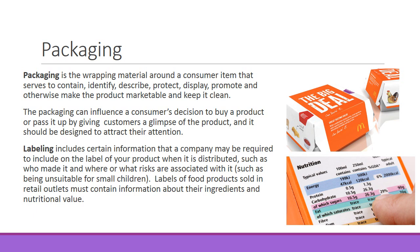Labeling includes certain information a company may be required to include on the label of a product when distributed — who made it, where, or what risks are associated with it, such as being unsuitable for small children. For example, you go to McDonald's, get a Happy Meal, they give you a toy that says right there 'not suitable for children under three,' and you hand it to your two-year-old, oblivious because we're so used to ignoring labels. Labels of food products must contain information about ingredients and nutritional value.